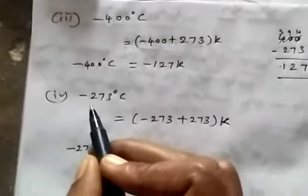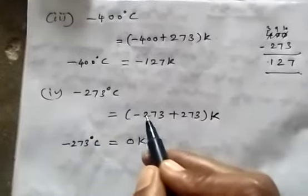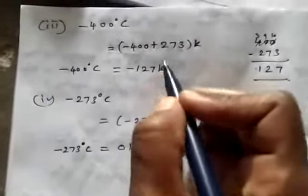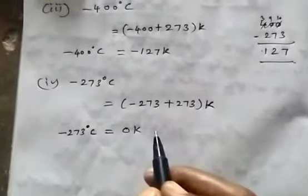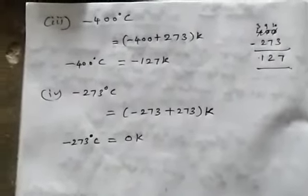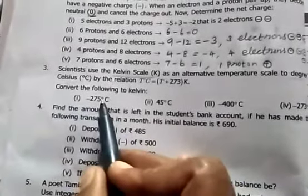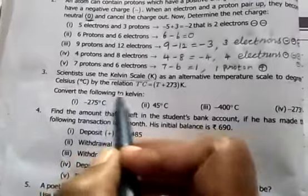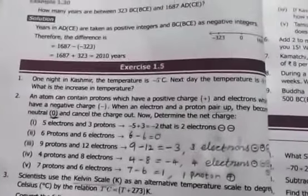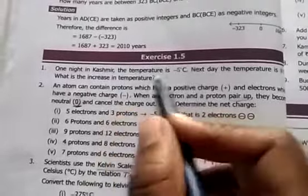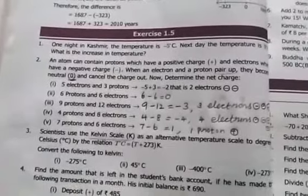Fourth: minus 273 degrees Celsius. So minus 273 plus 273 equals zero — they cancel, giving 0 Kelvin. In the third question we were given degrees Celsius and converted to Kelvin only. In this video we saw Exercise 1.5, first, second, and third questions. The remaining will be seen in the next class. Thank you.